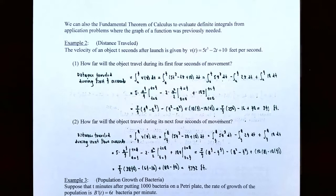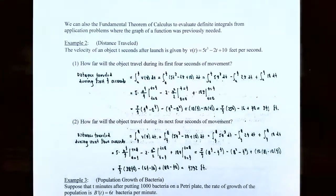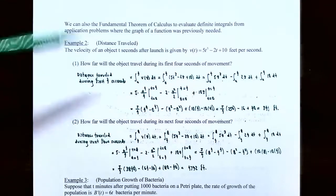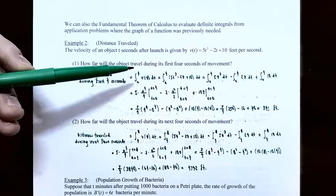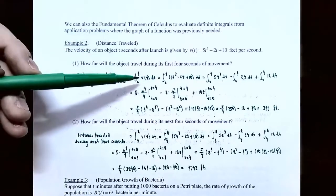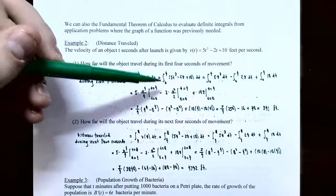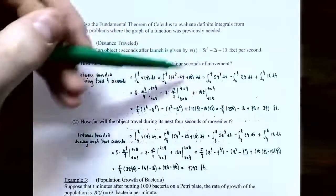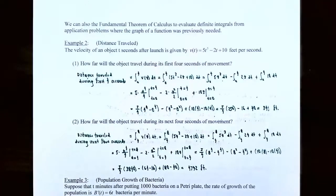We can also use the Fundamental Theorem of Calculus to evaluate definite integrals from application problems. Example 2: distance traveled. The velocity of an object t seconds after its launch is given by v of t equals 5t cubed minus 2t plus 10 feet per second. Number one: how far will the object travel during its first 4 seconds? The distance traveled is the definite integral from t equals 0 to t equals 4 of v of t dt, which equals the integral from 0 to 4 of 5t cubed minus 2t plus 10 dt.